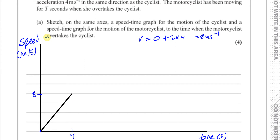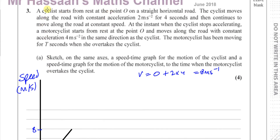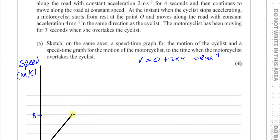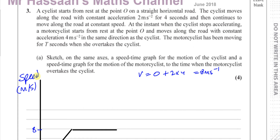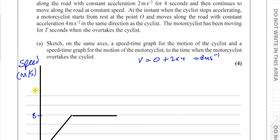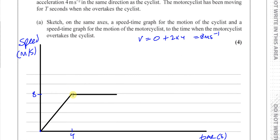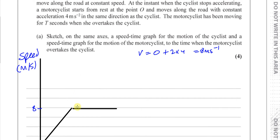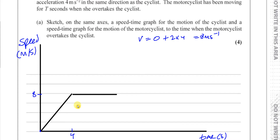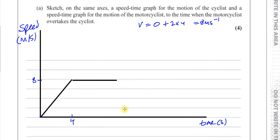After four seconds, the cyclist continues at constant speed — so we draw a straight horizontal line at 8 meters per second from t = 4 onwards. At that same instant — when the cyclist stops accelerating — the motorcyclist starts from rest at O with acceleration of 4 meters per second squared, which is twice as large, so this line on the graph is going to be a lot steeper.